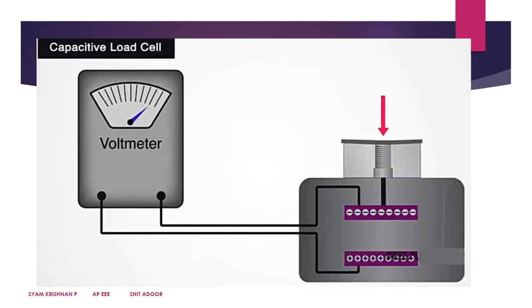The next type is the capacitive type load cell. Here, capacitance is used. The capacitance value depends on the distance between the plates. A parallel plate capacitor is used — when weight is inserted, the red arrow indicates the weight being applied. The plate moves, and because of this movement, the capacitance value changes. The corresponding voltage changes as well, and the weight is converted into an equivalent electrical parameter.